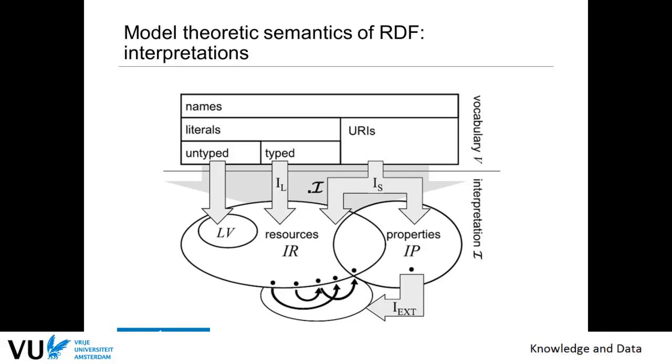So the way you would have your interpretations in RDF semantics is that you allow URIs to be either a property, and then you need a specific interpretation for your property as a pair of objects, or it's a resource and then you would need an interpretation that is just an object.